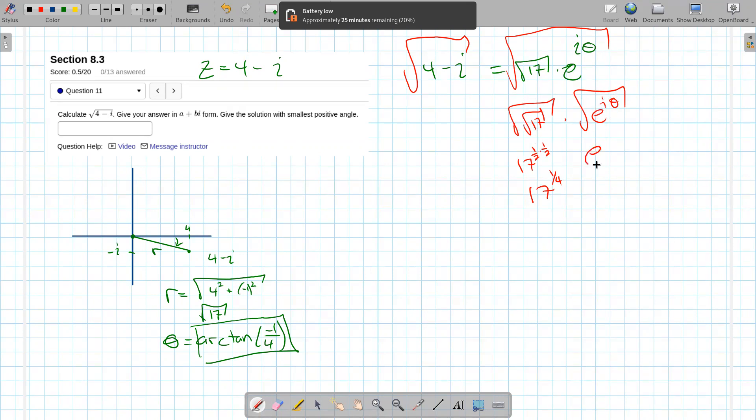And over here, I now have e to the i theta to the power one half, power to a power is multiply those powers. So that's e to the i theta over two.